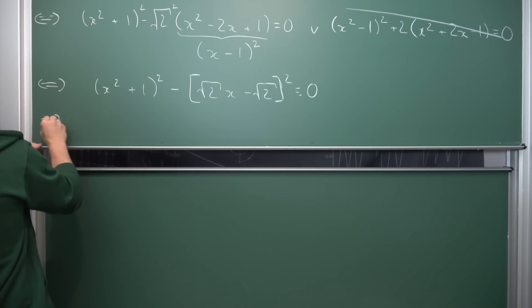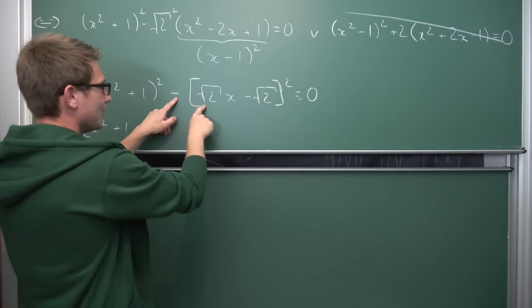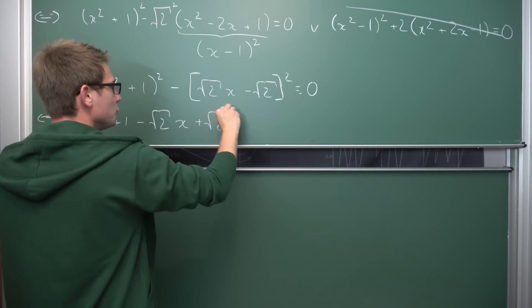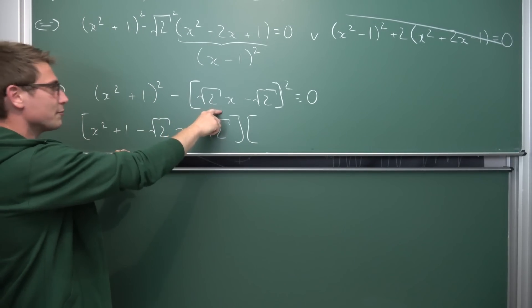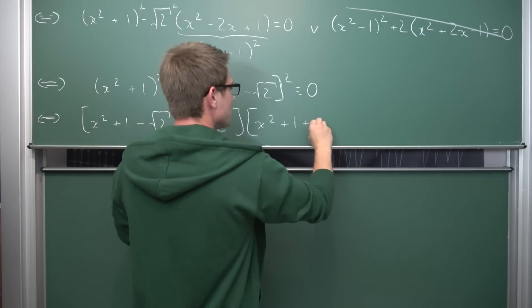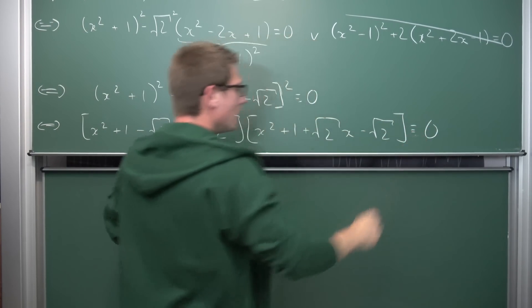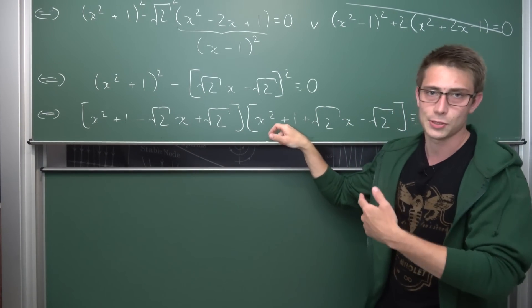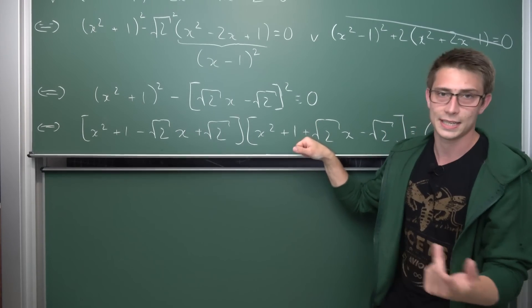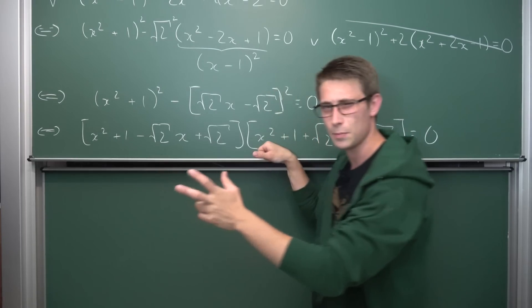The difference of two squares allows us to factor into the product of two factors. When a product equals zero, one of the factors must be zero. Applying the difference of squares formula, we get: (x²+1 − (√2·x − √2)) · (x²+1 + (√2·x − √2)) = 0. That is, (x² − √2·x + √2 + 1) · (x² + √2·x − √2 + 1) = 0. So either the first factor is zero or the second is zero, and we can solve each using the quadratic formula.